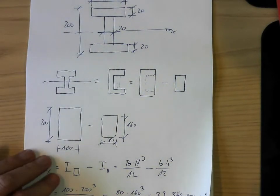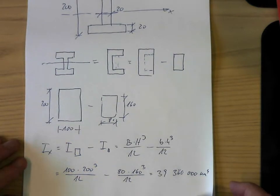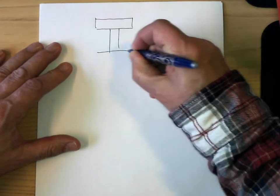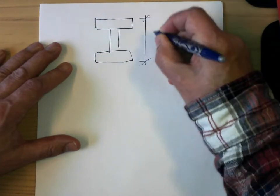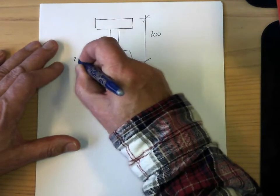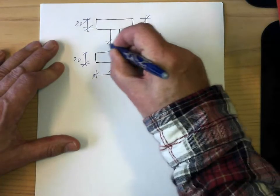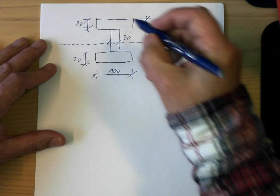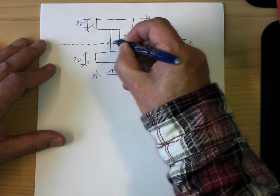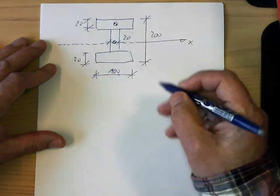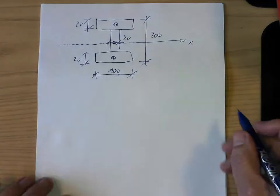We can also calculate this in an alternative way using Steiner's law. Steiner's law states: if I have an object whose center of gravity is offset from the axis of interest by a distance S, I first calculate the area moment of inertia as if the axis of interest passes through the center of gravity, then add a correction factor S² times A, where A is the area of that object.